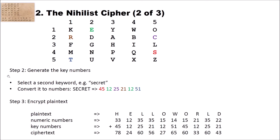On the receiver side, you do all the steps in reverse. You need to know both keywords — one for generating the Polybius square and the second for generating the key numbers. You write the ciphertext numbers in the lower row, write the key numbers above, then subtract: 78 minus 45 is 33, 24 minus 12 is 12, and so on. You then look up each result in the Polybius square — 33 is H, 12 is E — and reveal the plain text.